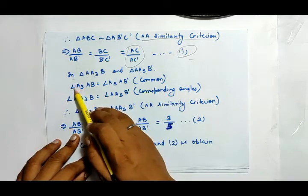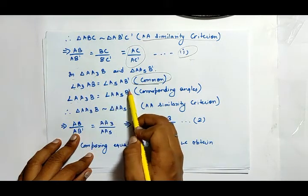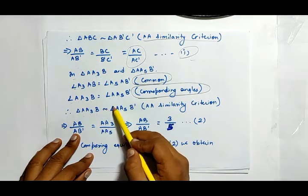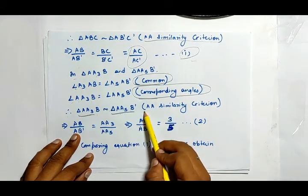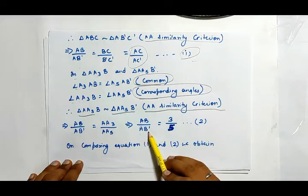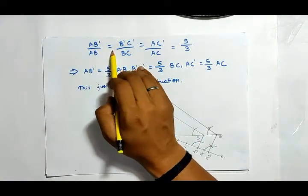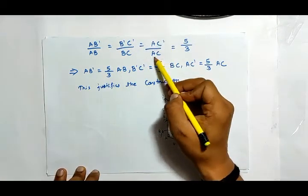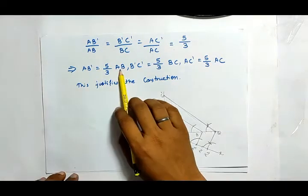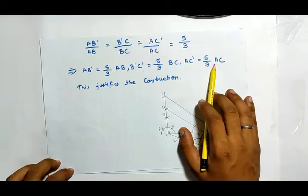In triangle AA3B and triangle AA5B dash, angle A3AB equals angle A5AB dash (common), and angle AA3B equals angle AA5B dash by corresponding angles. Therefore triangle AA3B is similar to triangle AA5B dash by AA similarity criterion, giving AB upon AB dash equals AA3 upon AA5 equals 3/5 — equation 2. On comparing equations 1 and 2, we get AB dash upon AB equals B dash C dash upon BC equals AC dash upon AC equals 5/3. Hence AB dash equals 5/3 AB, B dash C dash equals 5/3 BC, and AC dash equals 5/3 AC. This justifies the construction.